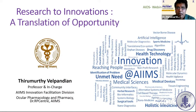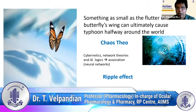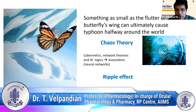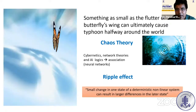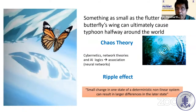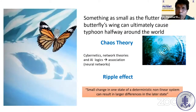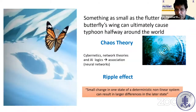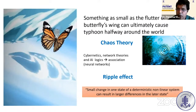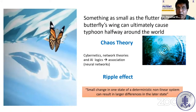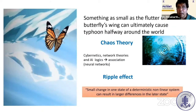Something as small as the flutter of a butterfly's wing can ultimately cause a typhoon halfway around the world. This is what the popular chaos theory is about. For a long time we always thought chaos theory was just chaos. But today, with the help of cybernetics, network theories, AI-based algorithms, and neural networks, it's possible to understand this effect. A small change in one state of a deterministic nonlinear system can result in a larger difference in the later state.